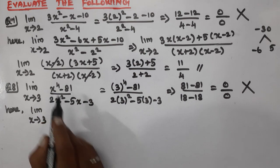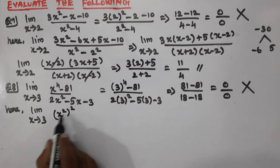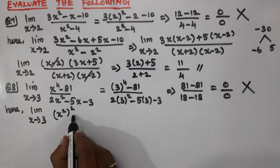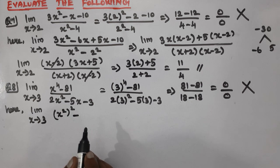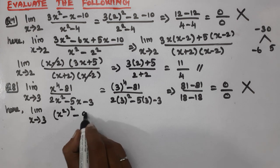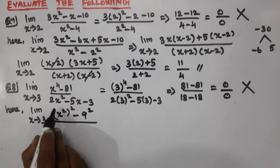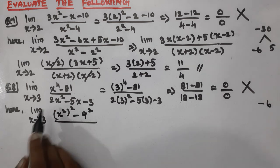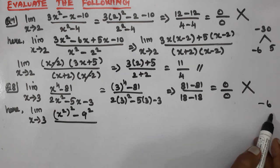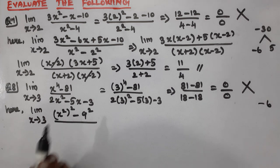I apply the a squared minus b squared model. x to the 4 minus 81 equals x squared whole squared minus 9 squared. And 81 equals 9 squared. The denominator: factorize 2x squared minus 5x minus 3.